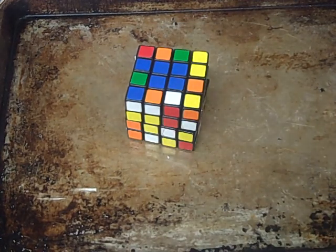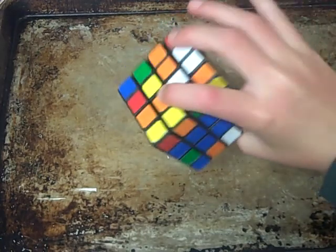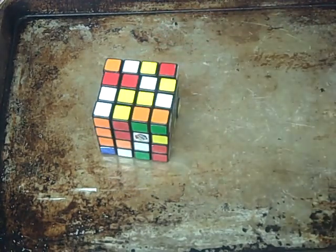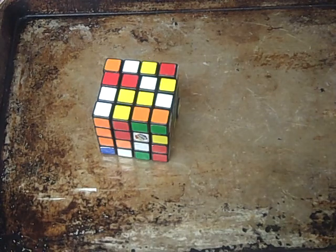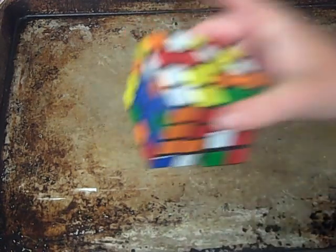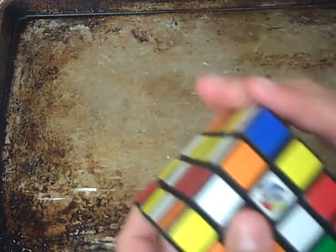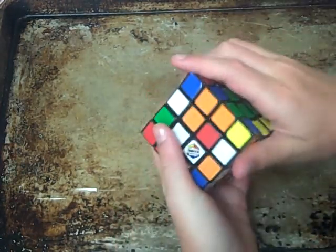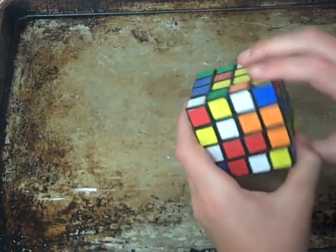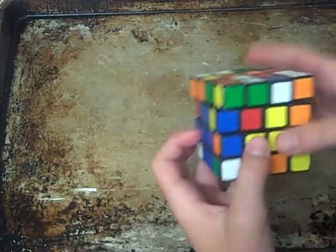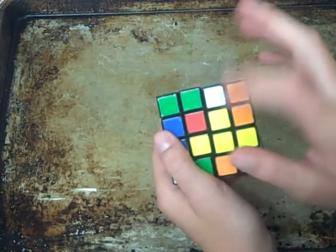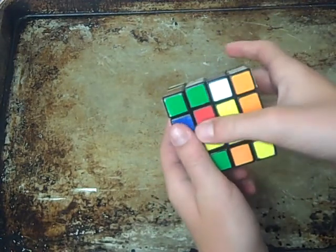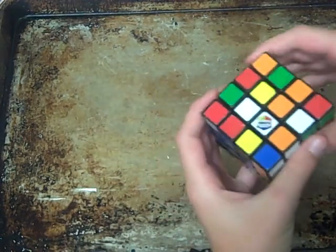Now, for the harder centers. The middle layer. So, pick a center to solve first. I usually pick red, because I like red. So, solve it just like the green. No use for algorithms here. And, I actually think I might solve the yellow first, because it has that three thing.